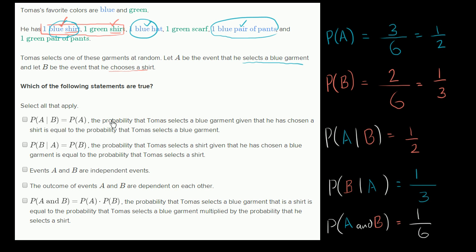Now that we've figured out all of that, let's answer the questions. The probability of A given B equals the probability of A — that works out, since probability of A given B is one half, and that's the same as the probability of A. The probability of B given A is equal to the probability of B — yes, probability of B given A is one third, and the probability of B is one third. Both of those statements are true.